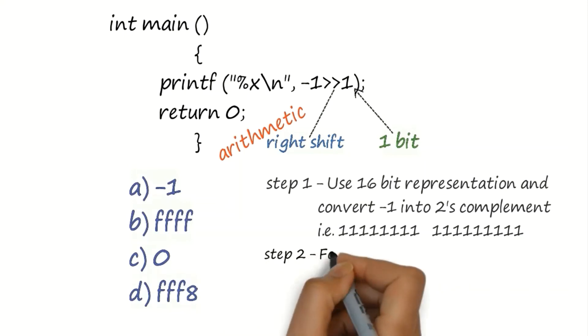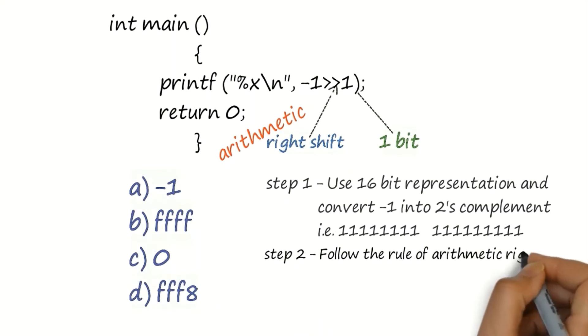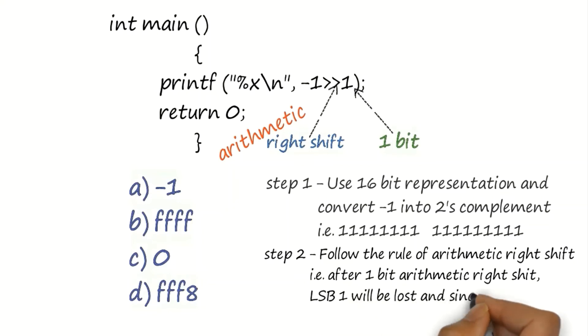As per the rule of arithmetic right shift, extreme right 1 bit will be lost, and since MSB was 1, the extreme left bit will be replaced by 1.